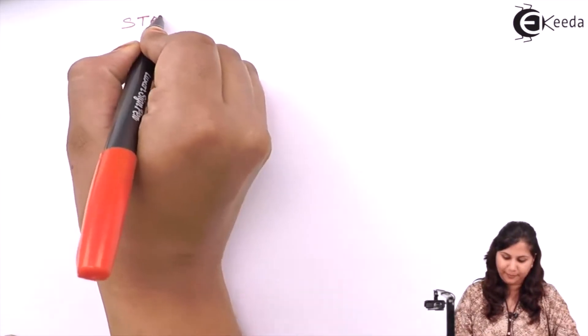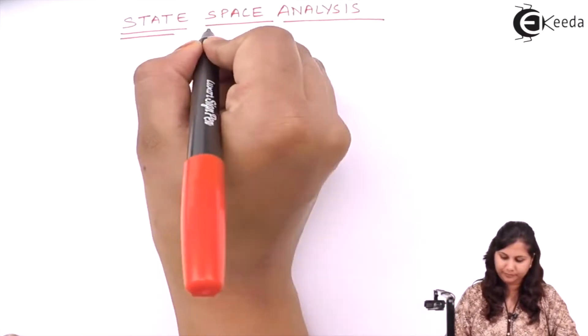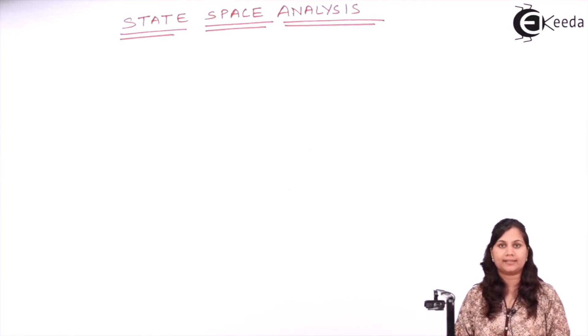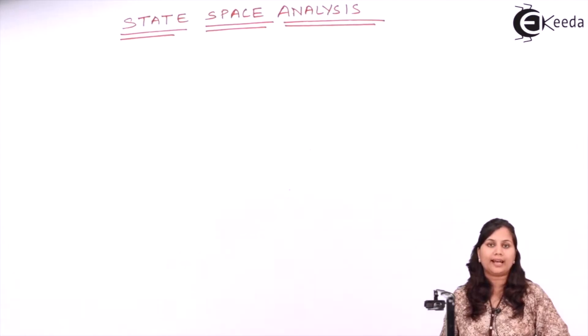Hello friends. In this video we are going to study about a new technique — state space analysis in control systems. In control systems there are two techniques: one is the conventional technique and the other is the modern technique. These techniques are used for the analysis and design of control systems. The conventional technique was based on the transfer function, and the modern technique is based on state space analysis.